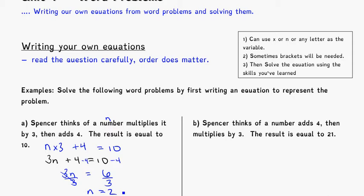Another example. Spencer thinks of a number — we'll call it N — adds 4, then multiplies by 3. The result is equal to 21. Now, if I write it without thinking carefully, it's not correct. The 3 would only times by the 4, giving N plus 12 — but that's not right. The 3 should be multiplying N plus 4, not just the 4. So it's not timesed by N plus 4 as written — we need brackets.